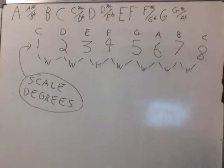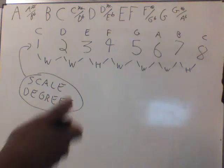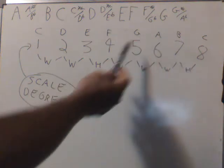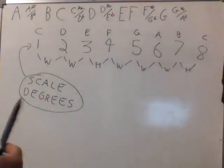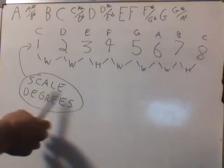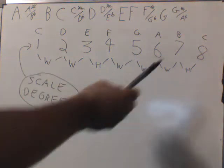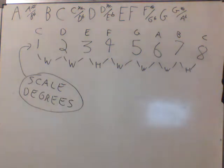The fifth degree of the C major scale is G. Now, generally, or most of the time, we leave out the word degree. We just say the fifth of the C major scale is G. The third of the C major scale is E. But all you need to know is that there are these things called scale degrees, and we can refer to any note in a major scale by these numbers.